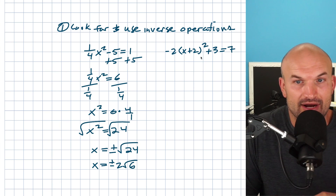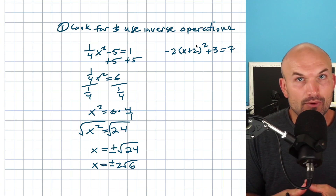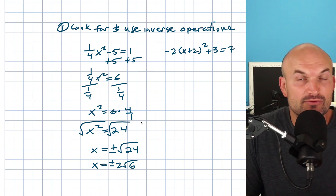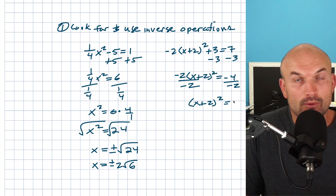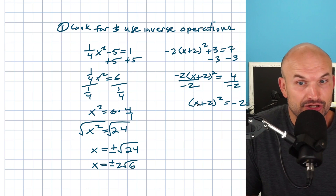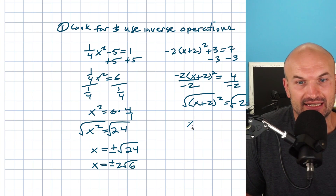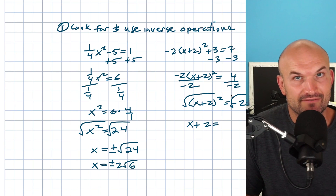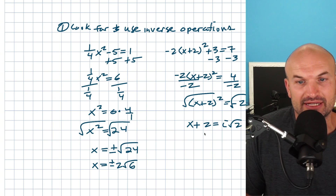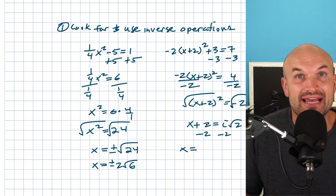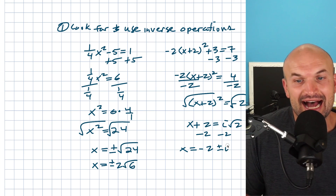In this next example, there are a lot of inverse operations: adding three, multiplying by negative two, and inside the parentheses adding by two. We want to isolate the quantity squared, just like we did before. So subtract three from both sides first, then divide by negative two before undoing the squaring. Now we cannot subtract the two inside the parentheses because that quantity is being squared. So we take the square root of both sides, leaving x plus two equals the square root of a negative number, which brings us into the imaginary unit system. That gives us i square root of two, and then subtracting two from both sides — remembering the plus or minus — our final answer is negative two plus or minus i square root of two.